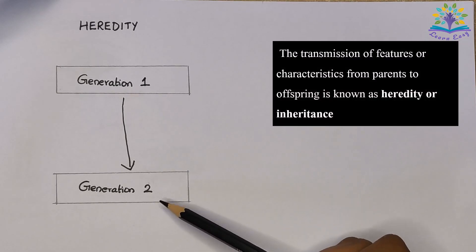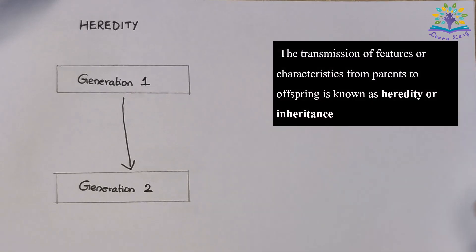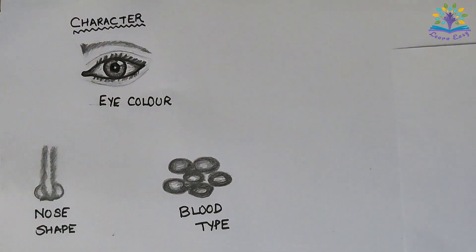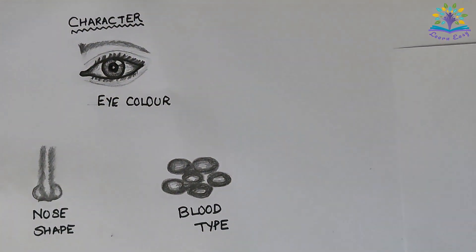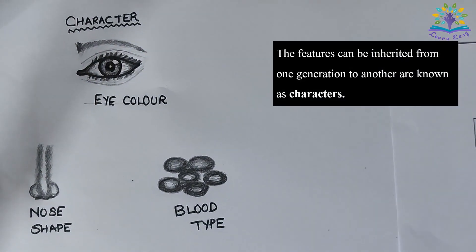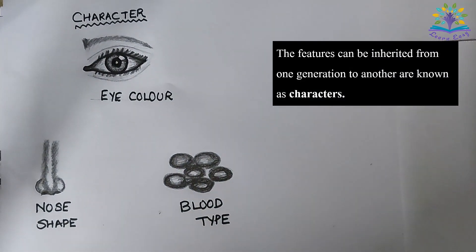The transmission of features or characteristics from parents to offspring is known as heredity or inheritance. The features that can be inherited from one generation to another are known as characters. For example,